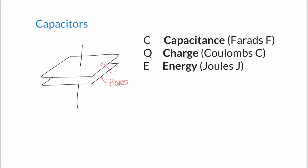In truth, current can flow in a circuit containing a capacitor so long as the capacitor is charging. Once fully charged, current can't flow anymore. This is possible because of the very small gap between the two plates — marked here as D for the distance between the plates. I'm also marking the area of the plates as A.